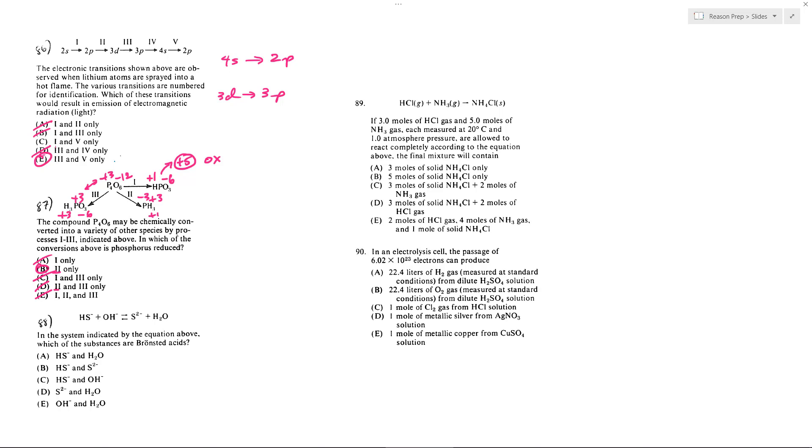88, which is the Bronsted acids. Bronsted acids are the ones that donate their proton. Notice HS- gives up its proton to become S2-, so HS- is going to be one of our Bronsted acids. Going in the other direction, H2O is going to give up its proton to become OH-, and so water would be the other Bronsted acid. We would get A, which means OH- and S2- would be our Bronsted bases.